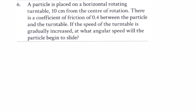In question 6, we have a particle placed on a horizontal rotating turntable, 10 centimeters, so 0.1 meters—just be careful. The coefficient of friction mu is 0.4. So what are we asked? If the speed of the turntable is gradually increased...